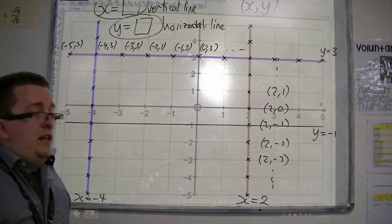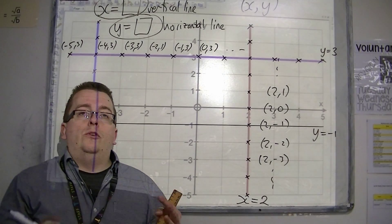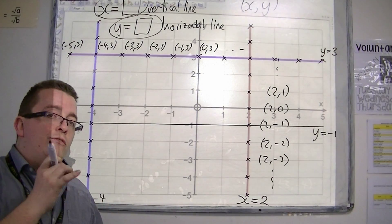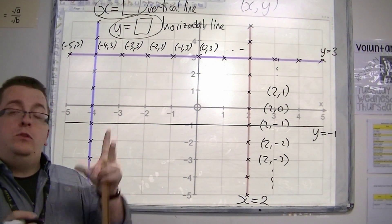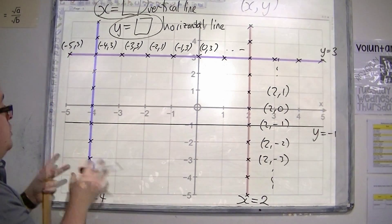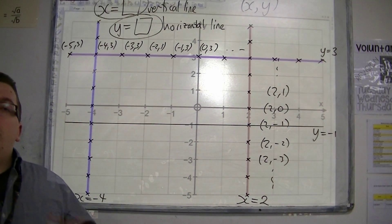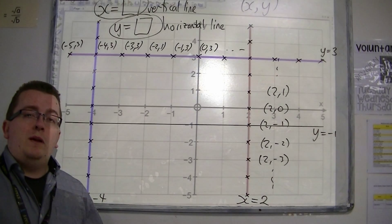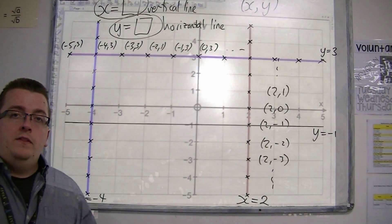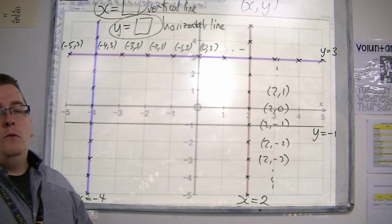So if I tell you to draw x equals 3 or y equals minus 4, you should be able to draw it and identify which is vertical and which is horizontal. You can always plot points as shown. This is quite an important task that leads on to drawing diagonal lines, and that's what we'll be doing next.